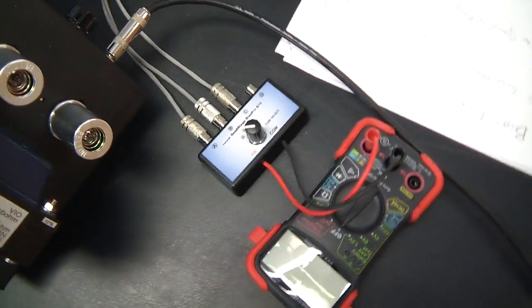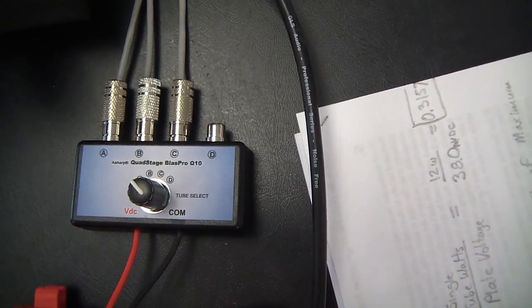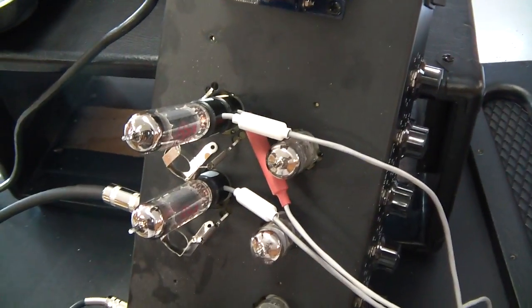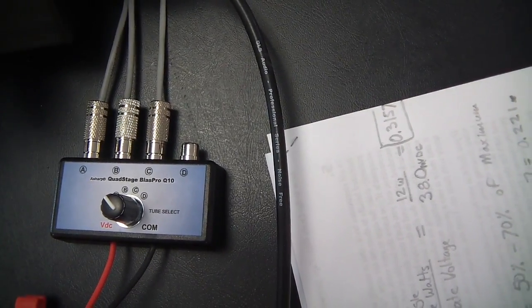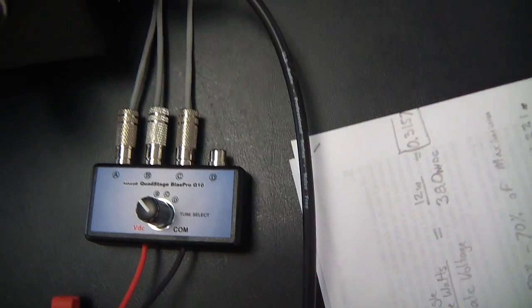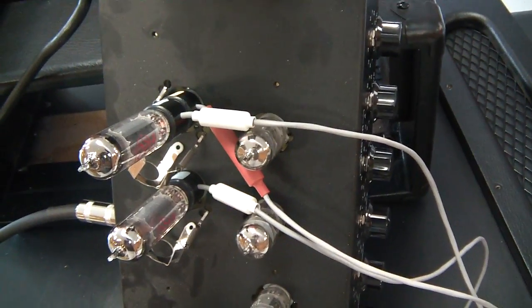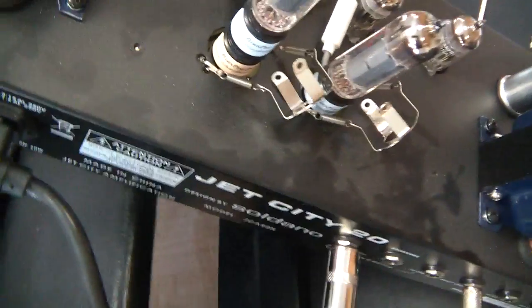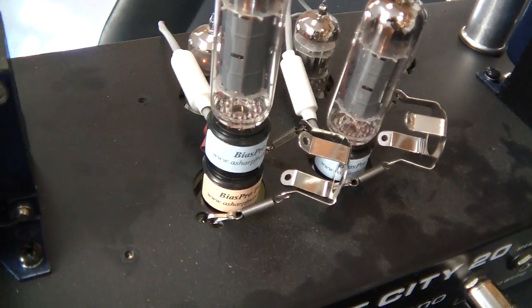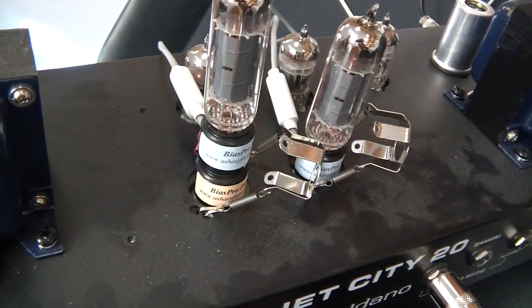with three leads. So the bias tool just enables me to select each of the power tubes and if you notice there's a third lead on there, lead number C, and that's the red one there that checks my plate voltage. And you'll need your plate voltage to be able to set the bias correctly.